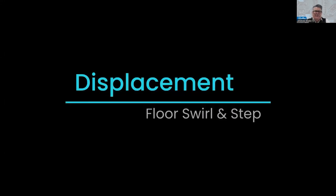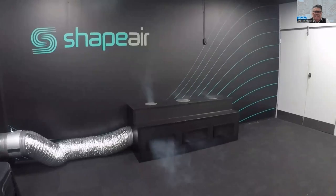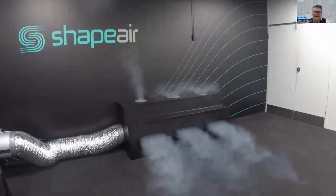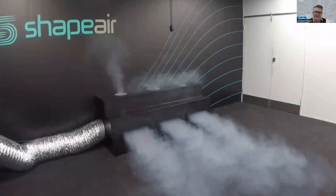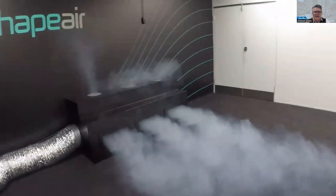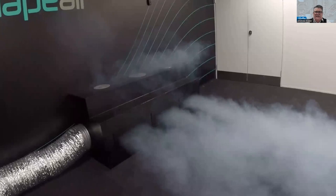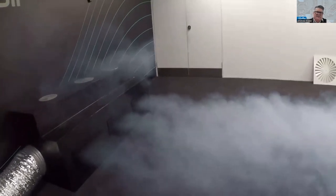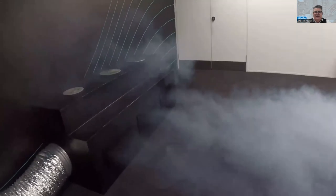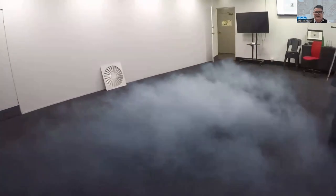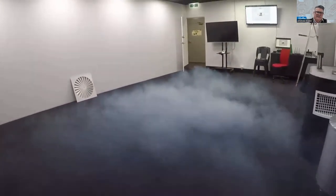The first demo is on floor swirl diffusers and step displacement. This is the plenum box we produced. Displacement is where you make a lake of clean air and it naturally convects to take pollutants away. You can see the swirl diffusers on top, the air cascading over and falling to the ground — this is what happens in a project. The air mixes and falls, with the step displacement creating the lake. This brief visual smoke demonstration shows how the system would operate continually.